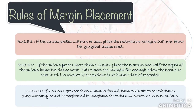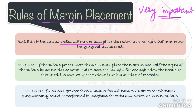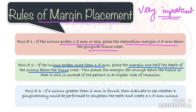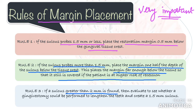Based on everything discussed, some rules are given for margin placement. Rule number one: if the sulcus probes 1.5 millimeters or less, place the restoration margin 0.5 millimeters below the gingival tissue crest. Having your restoration in the sulcus does not mean you are invading the biologic width — the problem starts when you approximate the most coronal cells of the junctional epithelium. Rule two: if the sulcus probes more than 1.5 millimeters, place the margin one-half the depth of the sulcus below the tissue crest. Rule three: if a sulcus greater than 2 millimeters is found, evaluate whether a gingivectomy could be performed to create a 1.5 millimeter sulcus.